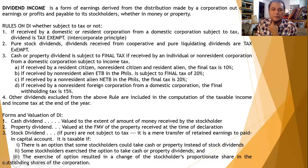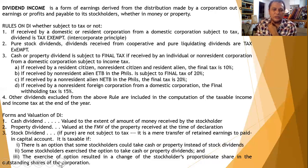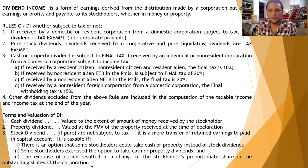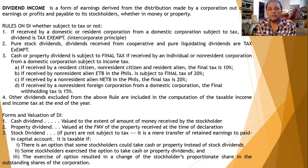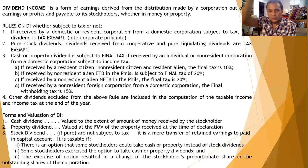Third: the exercise of the option resulted in a change of the stockholder's proportionate share in the outstanding shares of the corporation. For example, if one shareholder exercises the option taking cash or property while the rest take stock dividends, his shares will be diluted — meaning his share proportion goes down because the others are augmenting their stocks by way of stock dividend. Those stock dividends are therefore subject to tax.